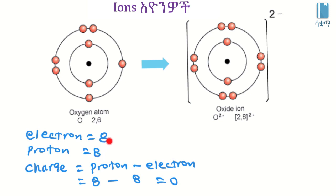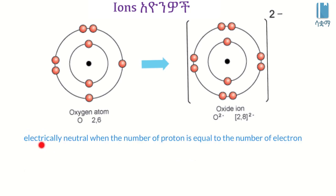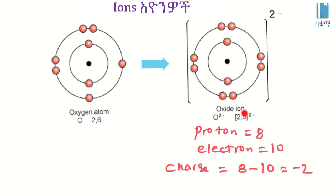The electron is electrically neutral. The atom is electrically neutral. The number of protons is equal to the number of electrons. The electron is electrically neutral.